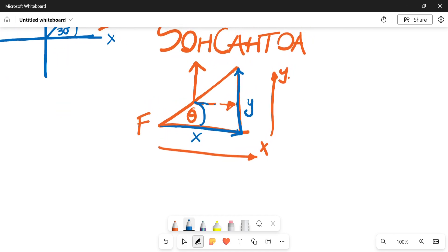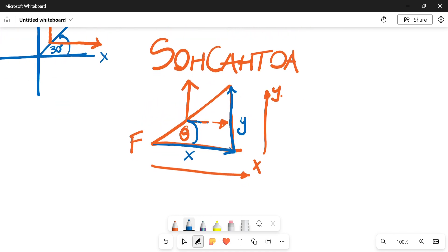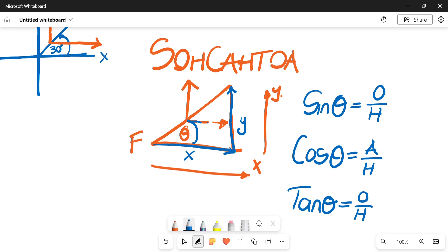So using our SOHCAHTOA, remembering that your sine theta would be your opposite over your hypotenuse, your cos theta or your cosine theta would be your adjacent over your hypotenuse. Your tan of theta, which we won't really use much, but it's still there, it does not take away from the fact that it exists, would be your opposite over your adjacent.